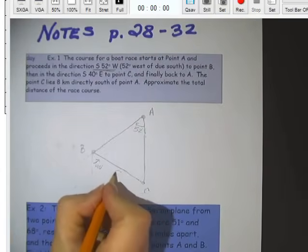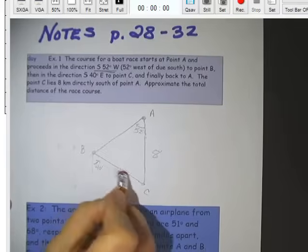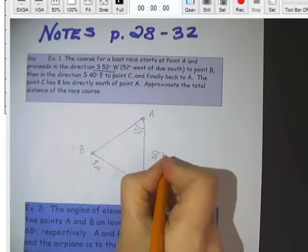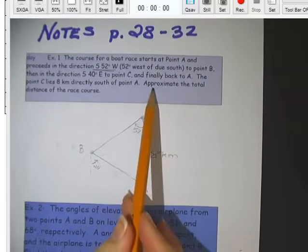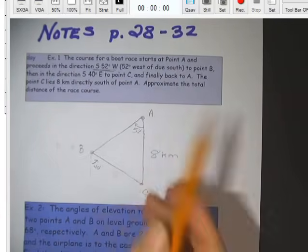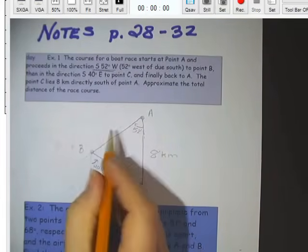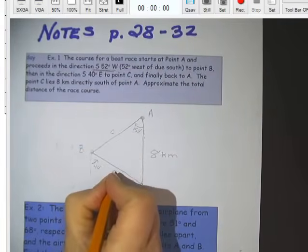So it also goes on to say that this is 8 kilometers from B to C. Oh, I'm sorry, from A to B, due south, A to C, 8 kilometers, we're supposed to find approximate the total distance of the race course. So we're supposed to find the distance all the way around.